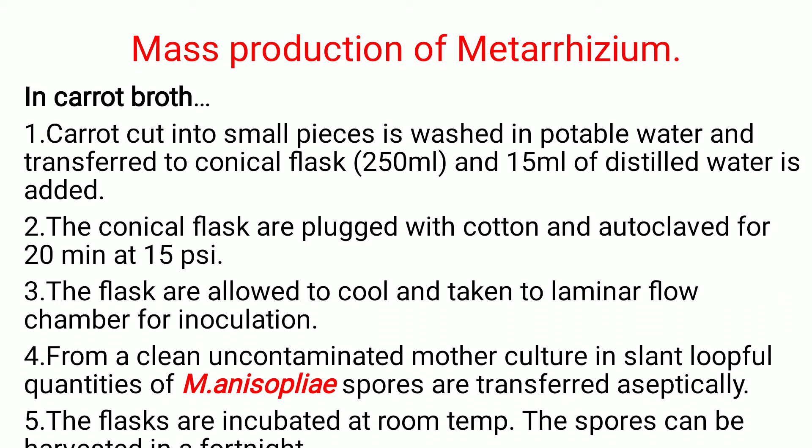The flask is taken into the laminar flow chamber for inoculation. From the clean uncontaminated mother culture in slant, loopful quantities of Metarhizium anisopliae spores are transferred aseptically. The flask is incubated at room temperature, and spores can be harvested in four nights — within two to three days. The procedure for Metarhizium and Verticillium is essentially the same; only sorghum grains are used for Verticillium and carrot for Metarhizium.